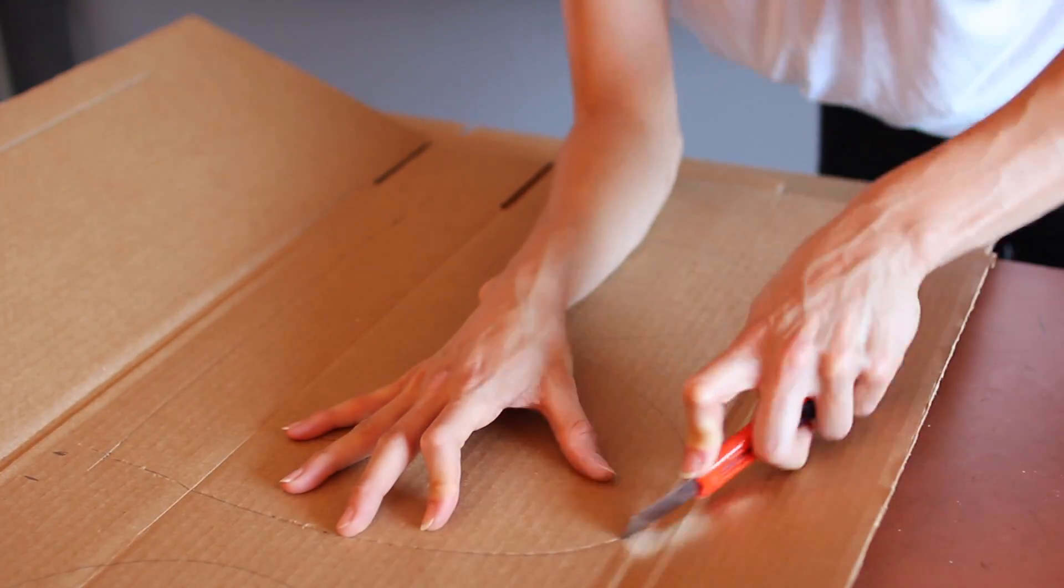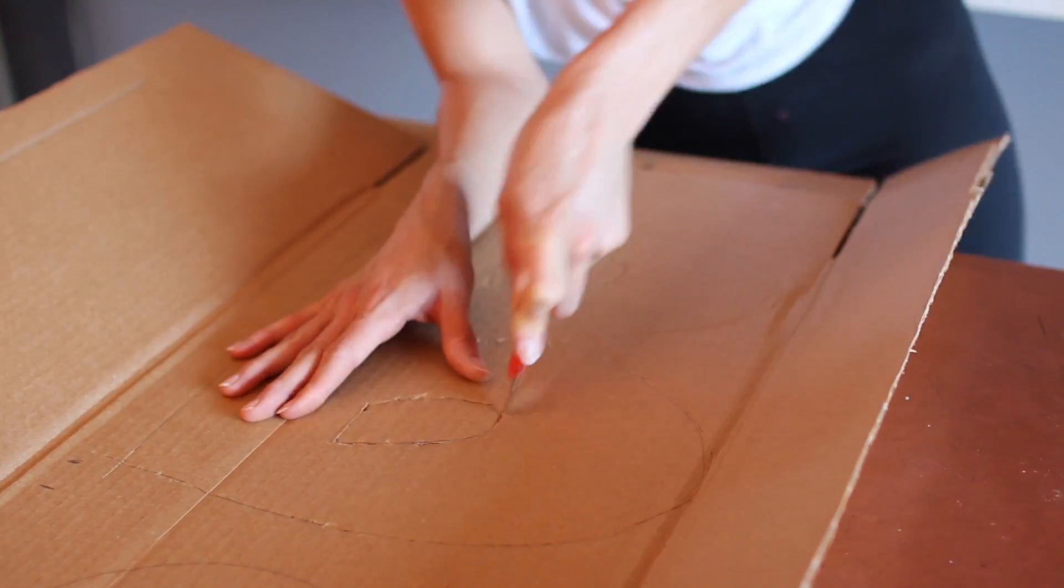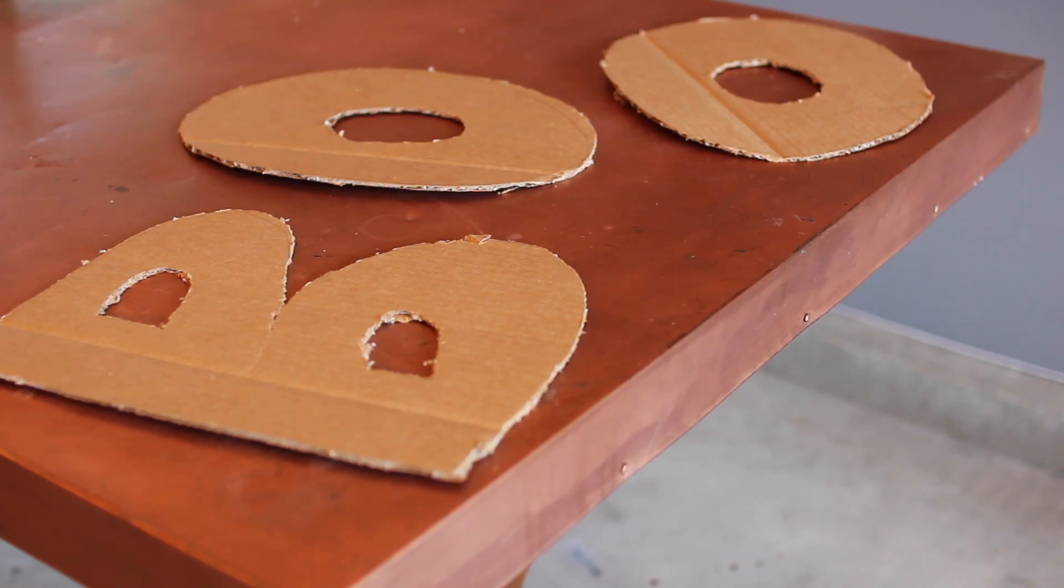Then you want to protect the surface that you'll be cutting on and just use your exacto knife to cut out all the letters and it'll look something like this.